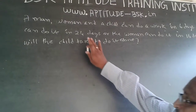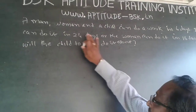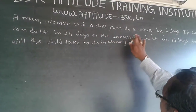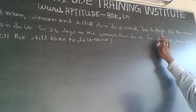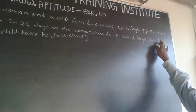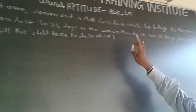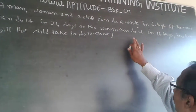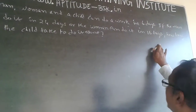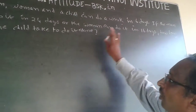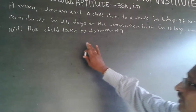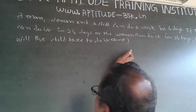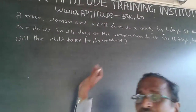The question is: a man, woman, and child can do a work in 6 days. If the man can do it in 24 days, or the woman can do it in 16 days, how long will the child take to do it alone?